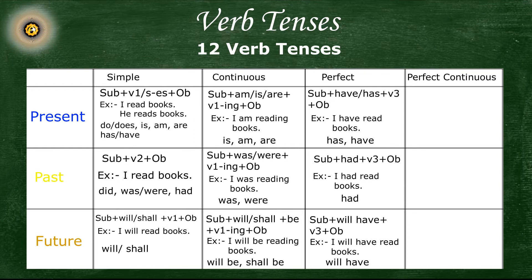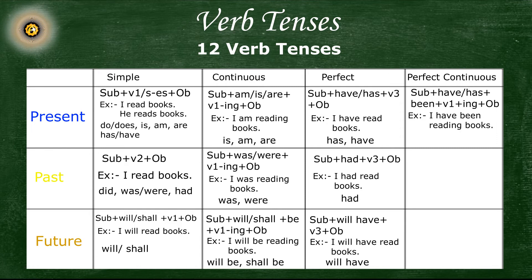Now, perfect progressive or perfect continuous tenses. First, let's talk about present perfect progressive or present perfect continuous tense. The sentence structure for this tense is: subject plus have or has been plus first form of the verb with '-ing' (present participle) plus object. The example sentence for this tense is: 'I had been reading books'.